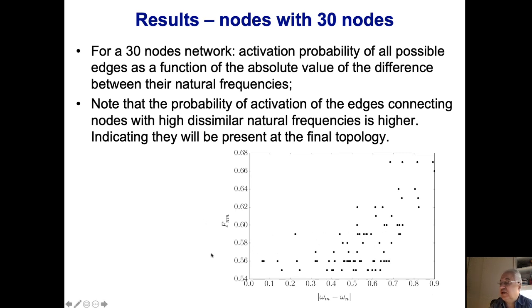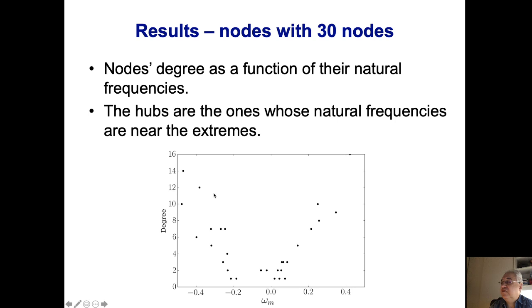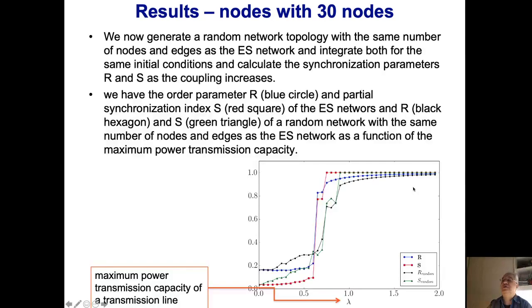Here we have the threshold. We see the nodes' degree related to the natural frequency. These are the hubs. The hubs are nodes whose natural frequency is near the extremes, and they have well-disconnected natural frequencies—the differences between them are larger. If we compare the network using the ES method with a random network designed with the same number of nodes, we can compare the results.